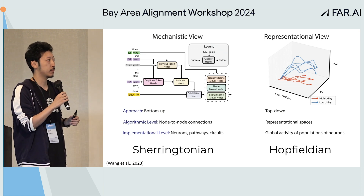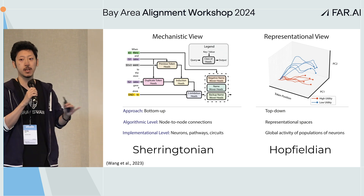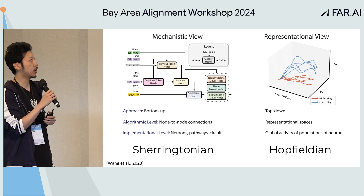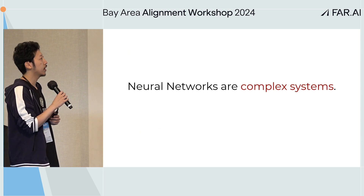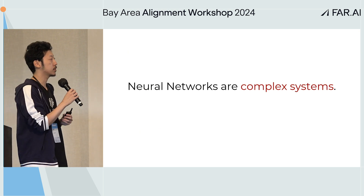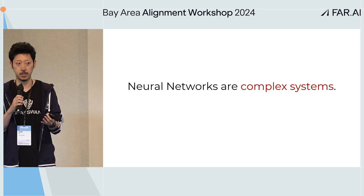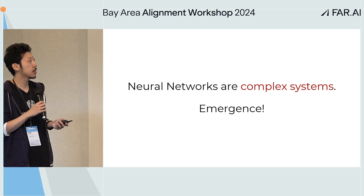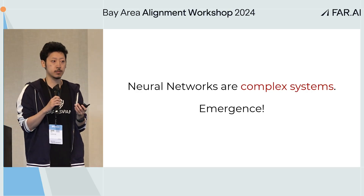Combinations of both approaches can be interesting, but I'll be focusing on this top-down approach. One motivating factor is that neural nets are inherently complex systems — you get very distributed features and representations. That's actually why neural nets work. But when analyzing these systems, you have to take into account the properties of emergence.